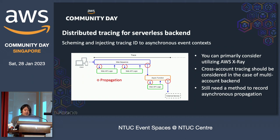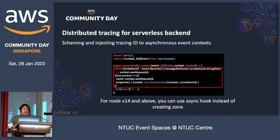When working on a three-factor app or any other event-driven workloads, you will definitely need some kind of tracing method to debug or trace a long sequence containing many asynchronous processes. You can primarily consider utilizing AWS X-Ray; however, you should also consider cross-account tracing in the case of a multi-account backend. You still need a method to record asynchronous event propagation, so you should inject a tracing ID into the asynchronous event context. I suggest adopting a practice of handling a tracing ID or correlation ID.